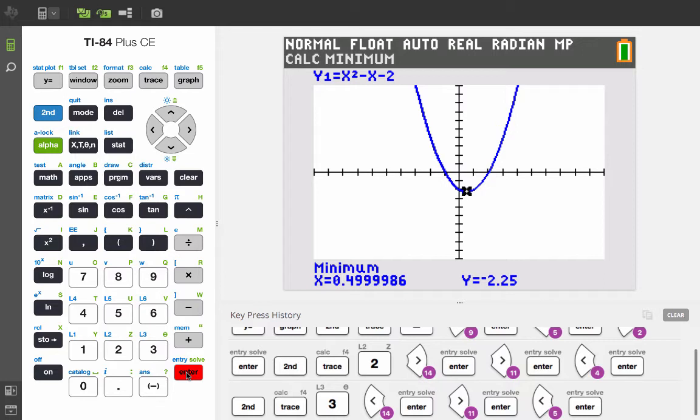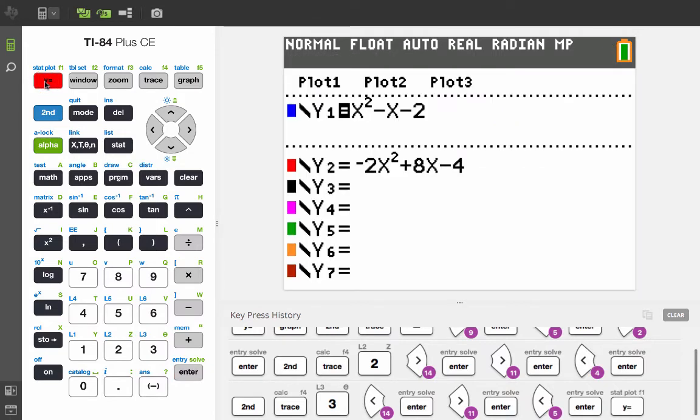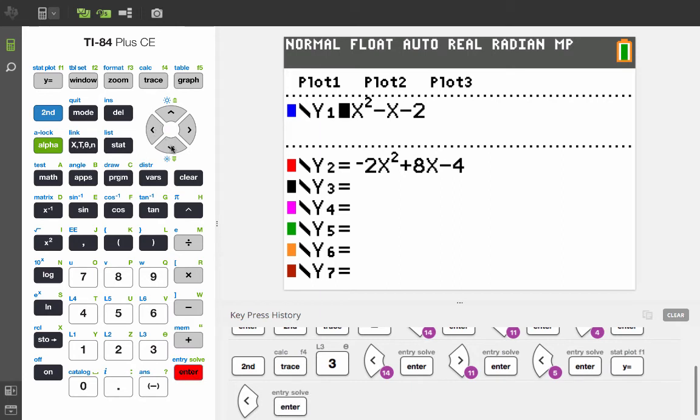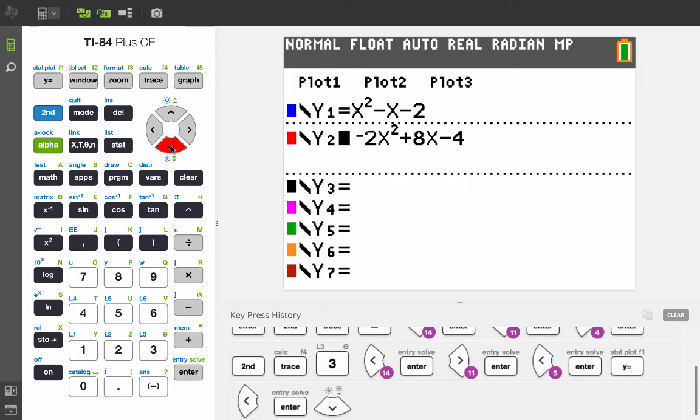Now let's do this one more time. This time we're going to use a function that opens the other way. Now in the y equals, I've stored one, and I'm going to use the left cursor to move to the left once, so that the cursor is over the equals sign. Now you'll notice that the equals sign on the y1 is darkened, which means that that's the function that's going to be displayed. We're going to move the cursor to the left, press enter to remove that function, go down one, and press enter to darken that. Now we can look at the graph.